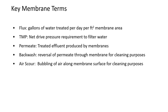A couple of key terms I'll use during the presentation. First and foremost is flux — defined as the gallons of water treated per square foot of membrane surface area, describing the efficiency of the membrane in terms of hydraulic throughput. Next, TMP, or transmembrane pressure, is an indicator of the net pressure required to push or pull water through the membranes. Permeate is the treated effluent generated by the membranes. Backwash is simply the reversal of permeate through the membrane for cleaning purposes. And air scouring is essentially pulling air up through the membrane to scour the surface and help keep the membrane clean.